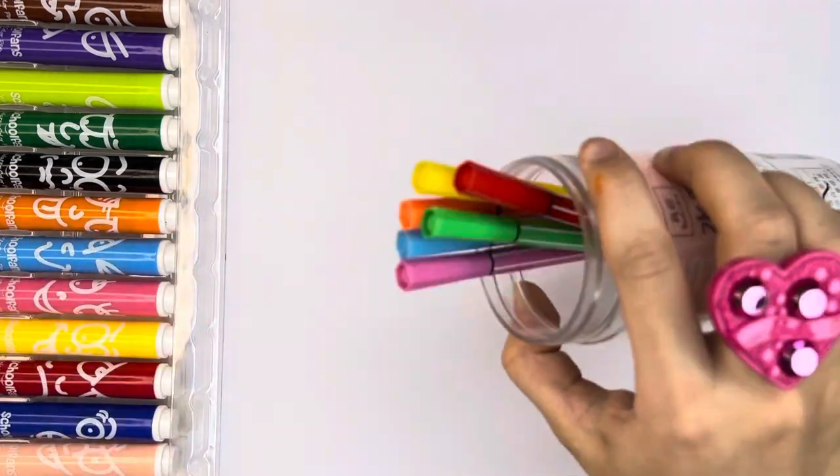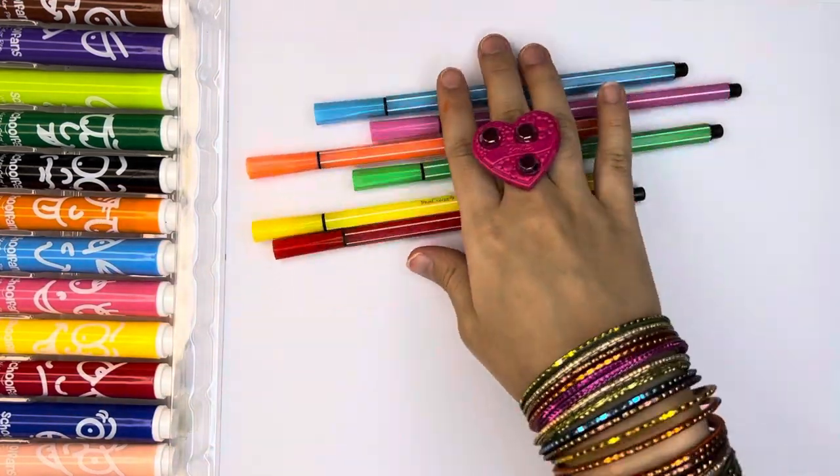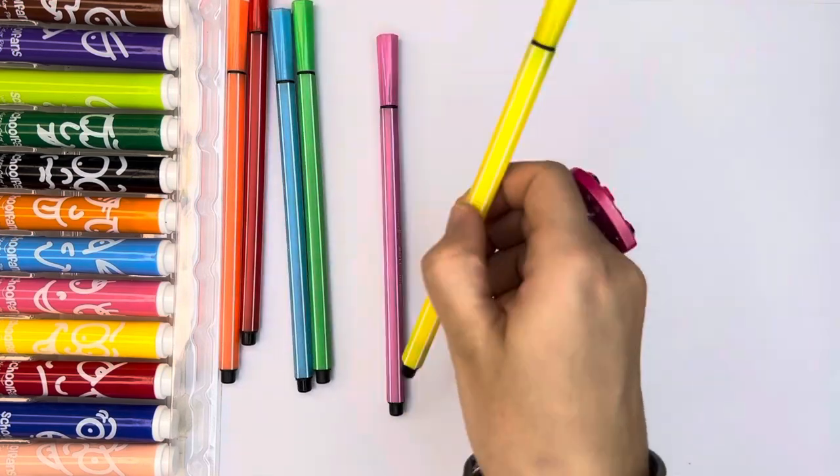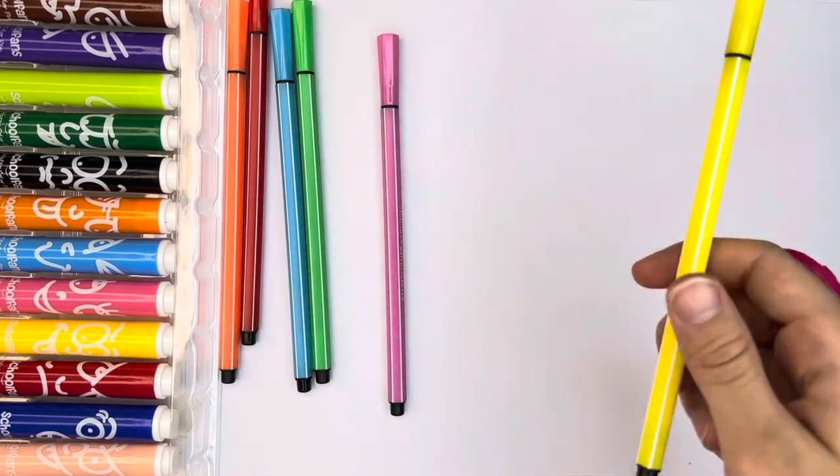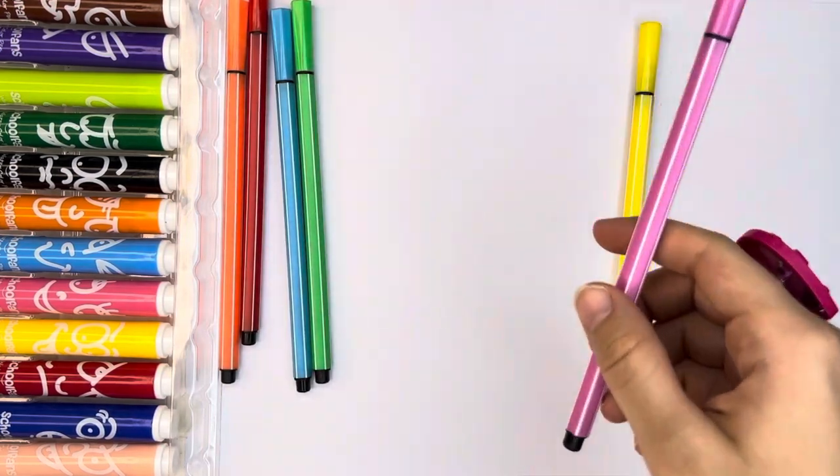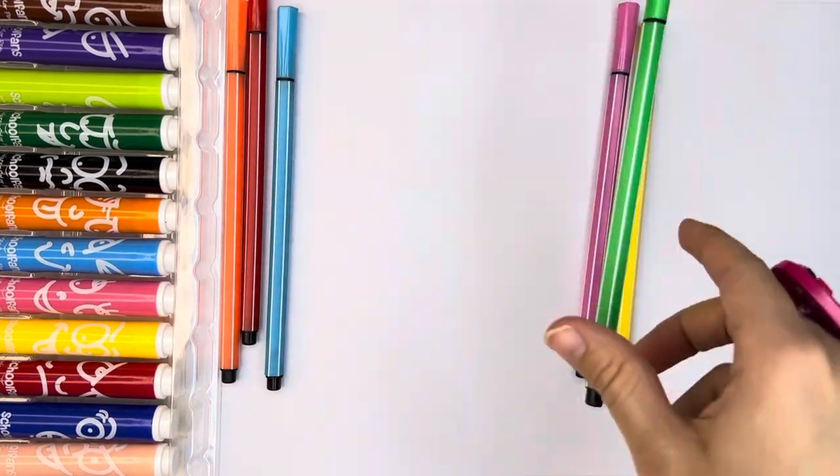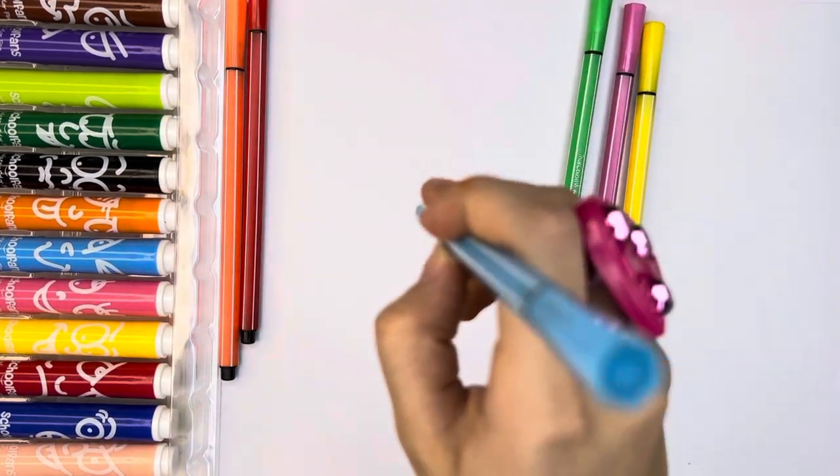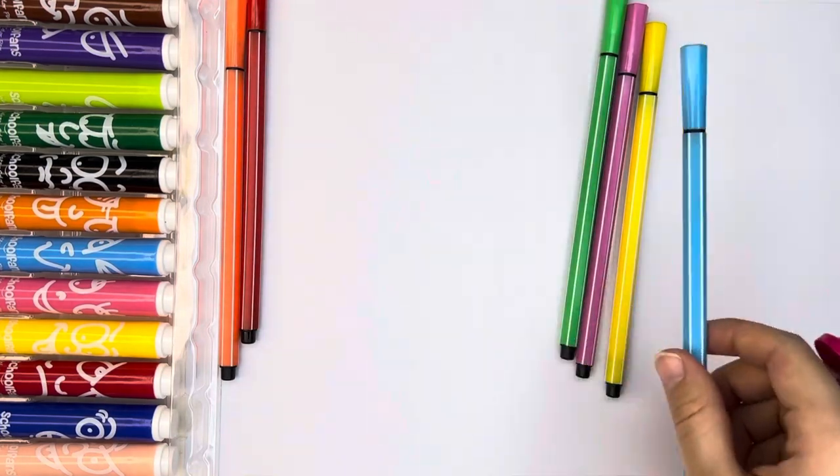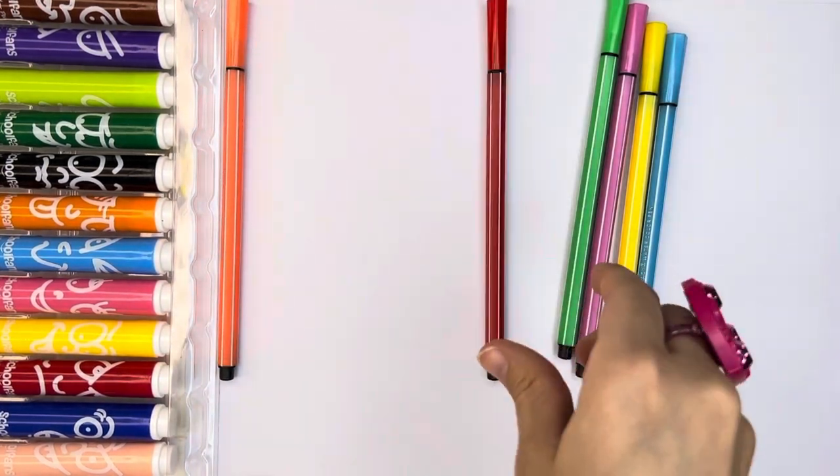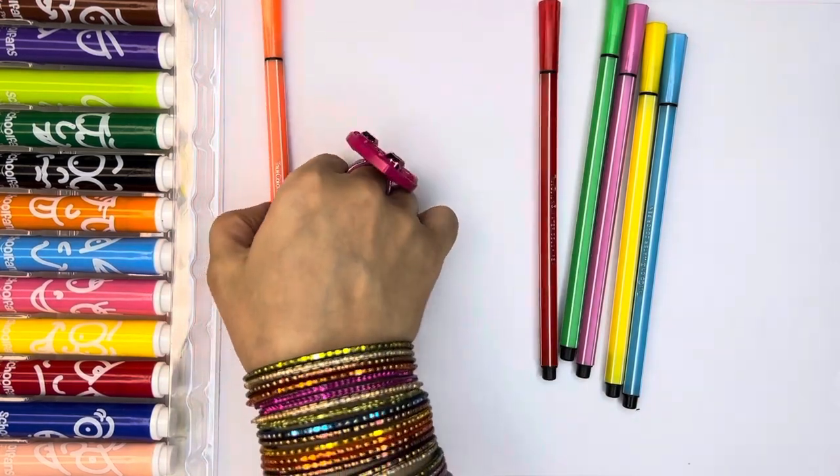First, let's learn some colors. We have some colors. Let's learn yellow color, pink color, green color, sky blue color, red color, orange color.